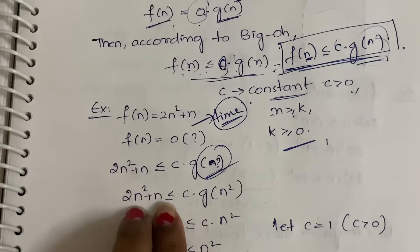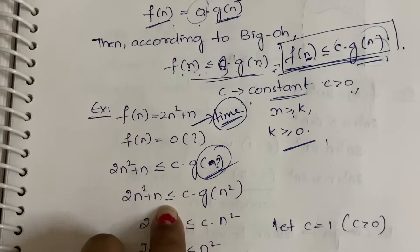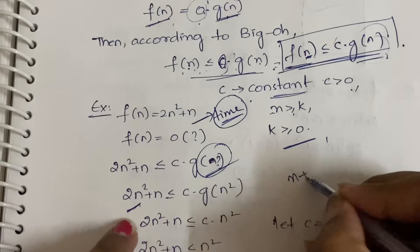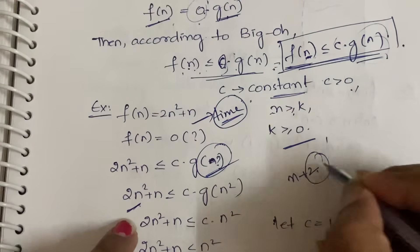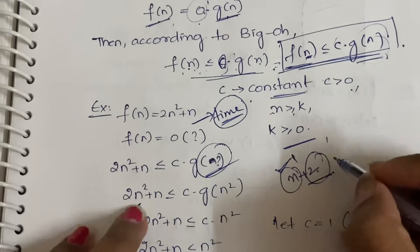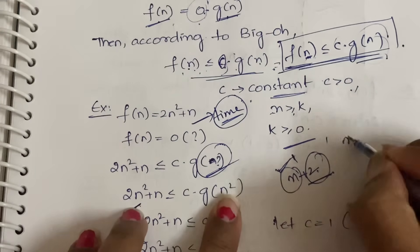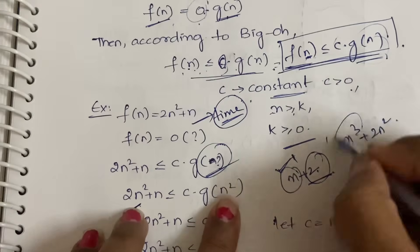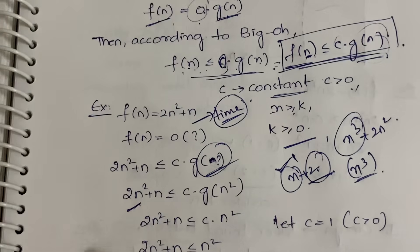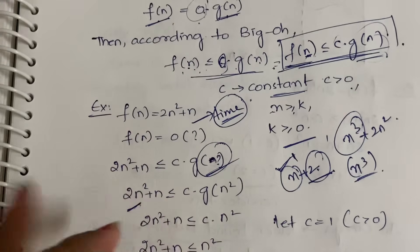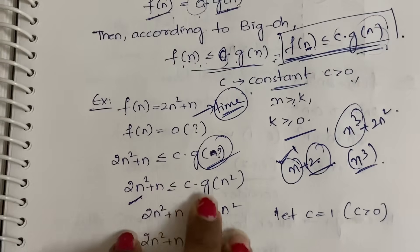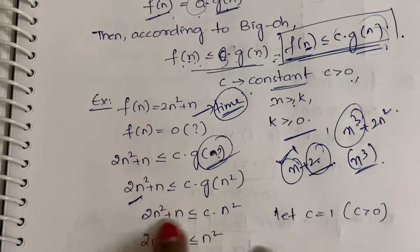Always consider the term with the highest power. For example, if you have n + 2, you consider n (power 1). If you have n² you take n². If you have n³ + 2n², you take n³. Constants and coefficients can be ignored. So 2n² + n ≤ c · n², and you need to find the value of c that satisfies this condition.